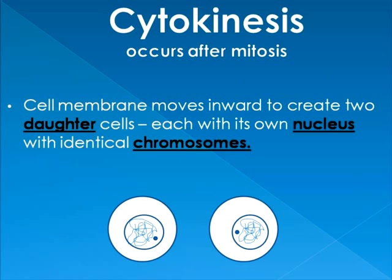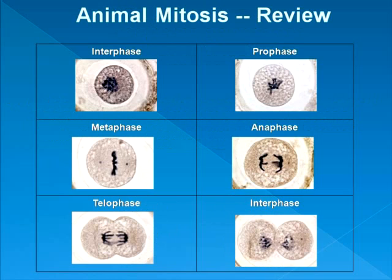Finally, we have cytokinesis — this is where the cell membrane moves inwards to create two new daughter cells, or the cell membrane pinches off, each with its own set of identical DNA and identical chromosomes. And that is mitosis. In summary for animal mitosis: interphase — DNA is replicated; prophase — centrioles move to the poles and spindle fibers begin to form; metaphase — spindle fibers attach to pairs of chromosomes and chromosomes line up along the equator; anaphase — they begin to separate; telophase — two new nuclei are distinctly formed; cytokinesis — two new sister cells back in interphase.